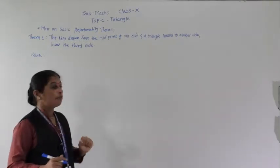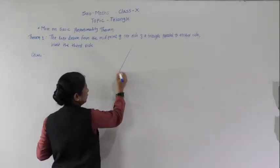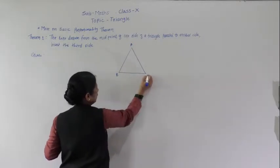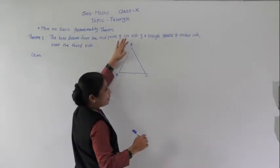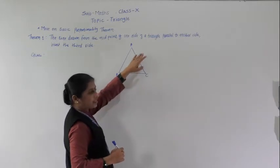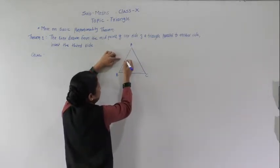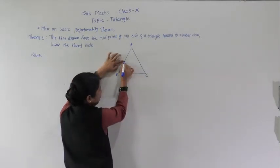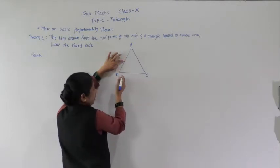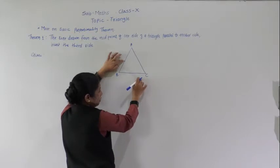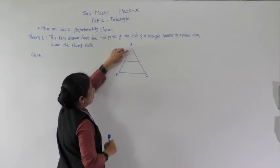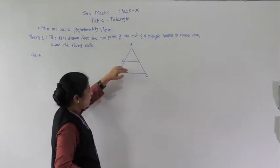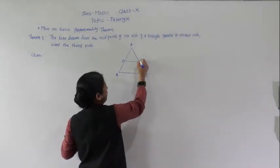According to this statement, first we will draw the figure — triangle ABC. The line drawn from the midpoint of one side of a triangle, parallel to another side. If we draw a line from D, the midpoint of side AB, and this line DE is drawn parallel to BC.